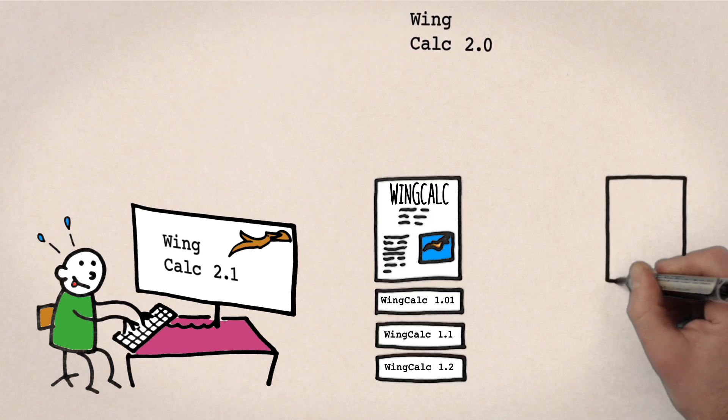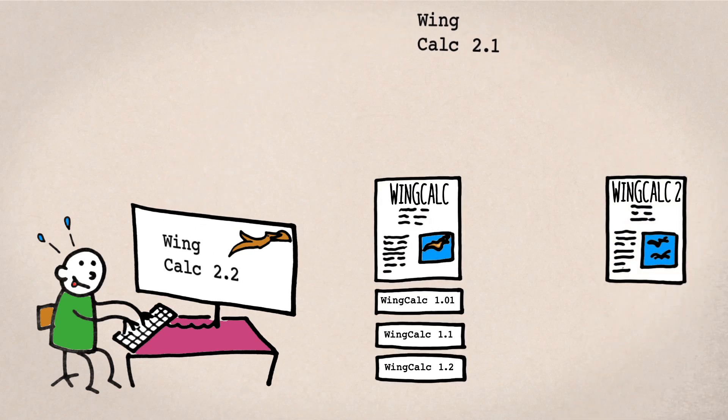Major overhauls, however, like versions with new functionalities or coded by new authors, become a new publication.